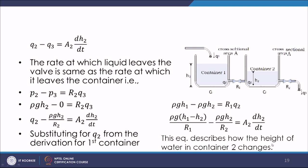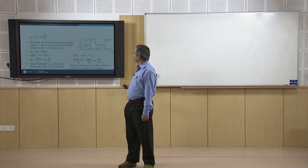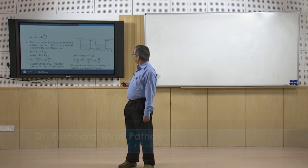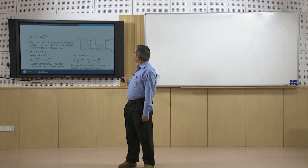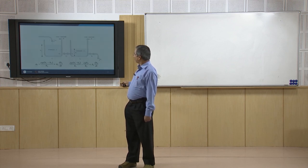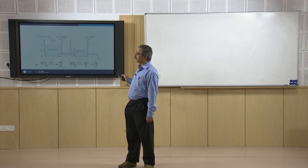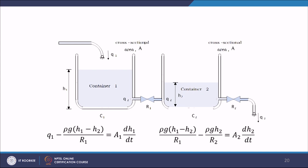The two-tank system is described by a pair of coupled equations: A1·dH1/dt for the first tank with input Q1, and A2·dH2/dt for the second tank requiring information about both H1 and H2. The H2 expression contains H1 terms, reflecting the coupling between the two tanks.